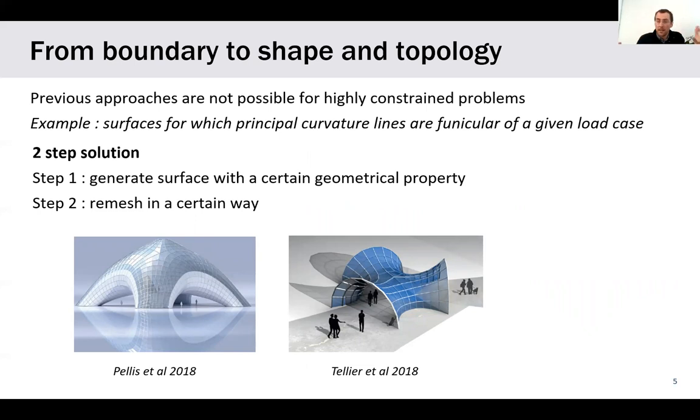Or you may also relax the proximity of your final shape to the target surface. For highly constrained problems, the previous two approaches tend to have limitations. There is a third way, more flexible: it is to take a boundary curve as an input and to derive both the shape and the topology pattern that fulfills all the properties you want.